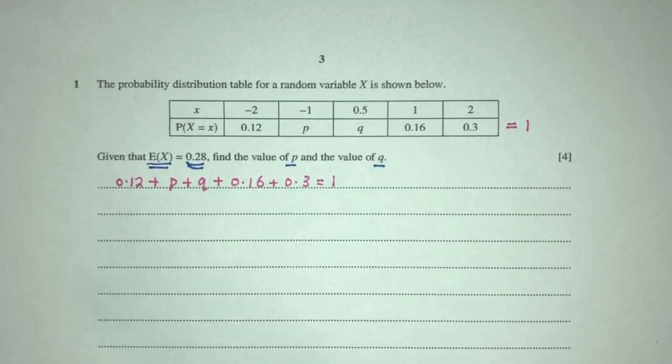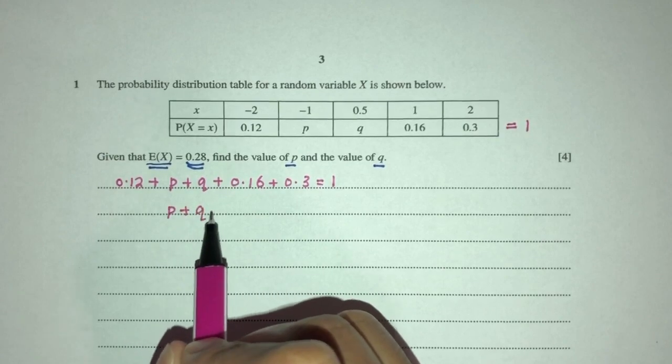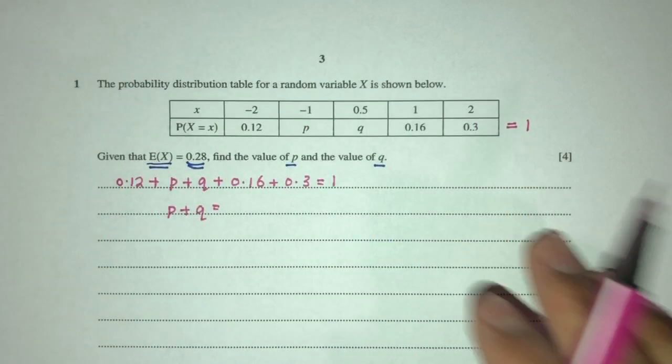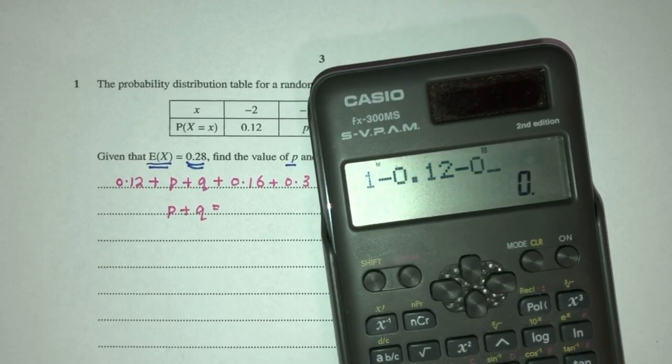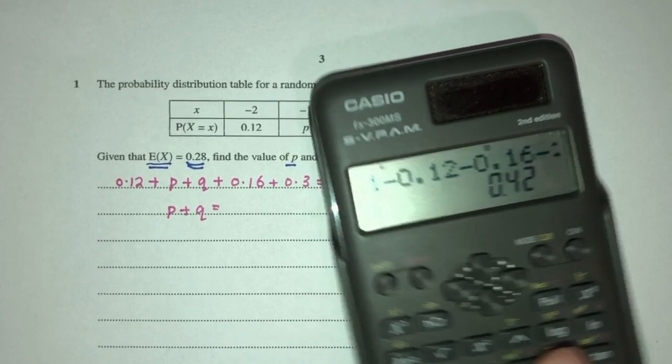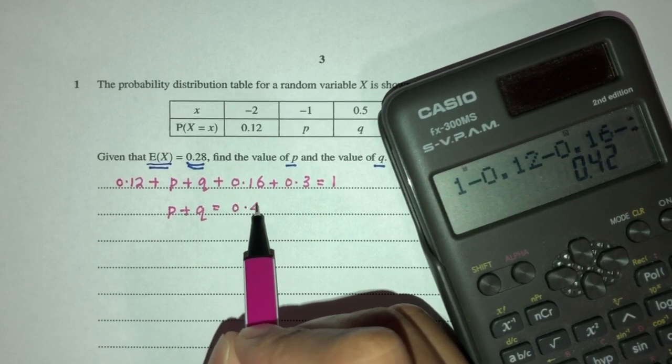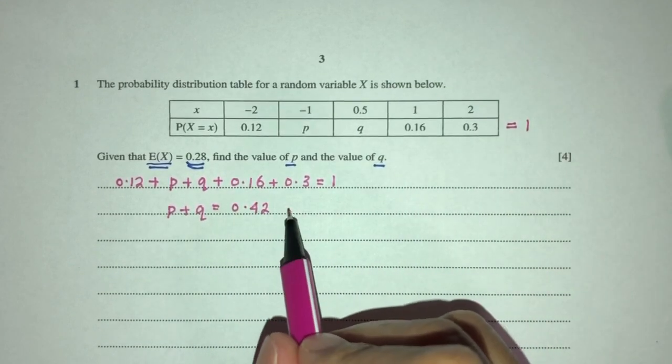Now, let's try to rearrange. I have P plus Q. Send everything else to the right-hand side. You will have 1 minus 0.12 minus 0.16 minus 0.3. That will become 0.42. And that is my equation number one.